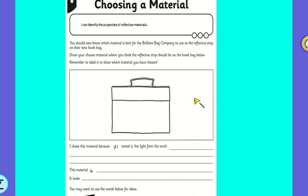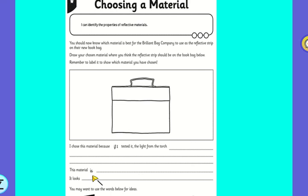This is your second science task. You should now know which material is best for the brilliant book bag company and use it. I'd like you to design on your sheet your book bag and where you want the reflective strips to go. If you ask your adults very nicely they might let you have a little bit of tin foil to add to it, but if not that's fine — just show me with labels. I'd then like you to tell me what material it is, why you chose it, and what it looks like. I look forward to seeing these book bag designs later. Don't forget to upload your work. Have a lovely day everyone!